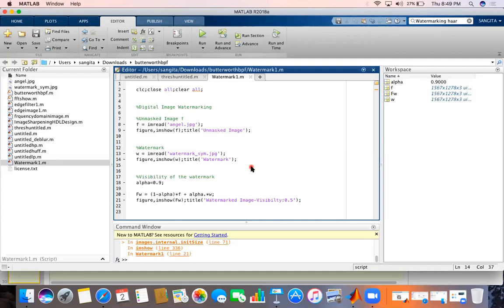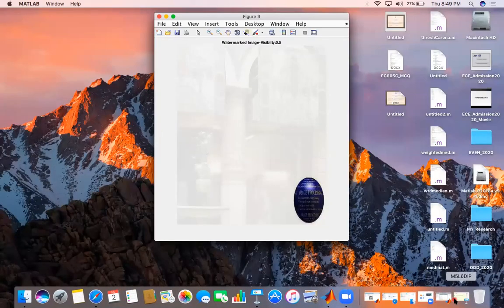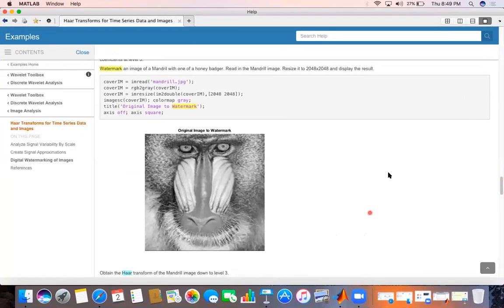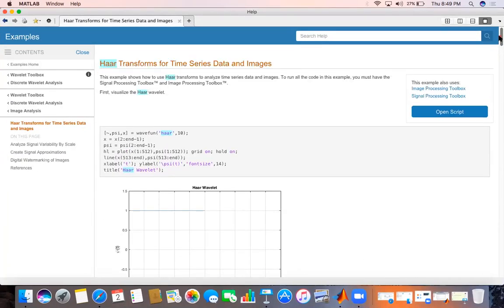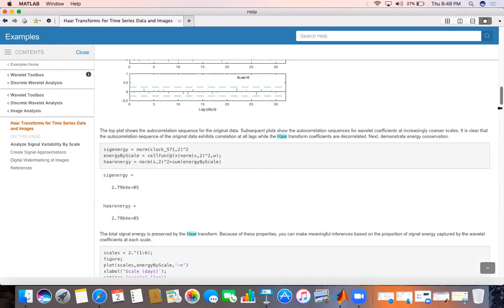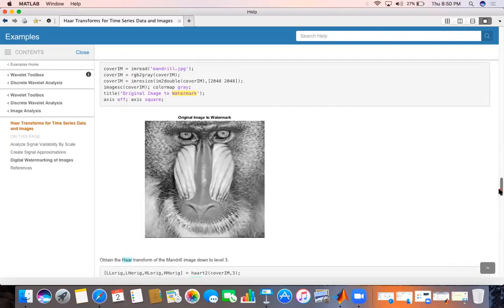Now in case of invisible watermarking, we will also study this. This is the inbuilt program of MATLAB. Haar transform for image watermarking, invisible watermarking. This is mandrill.jpg, the inbuilt image of MATLAB. It is the main image, original image.